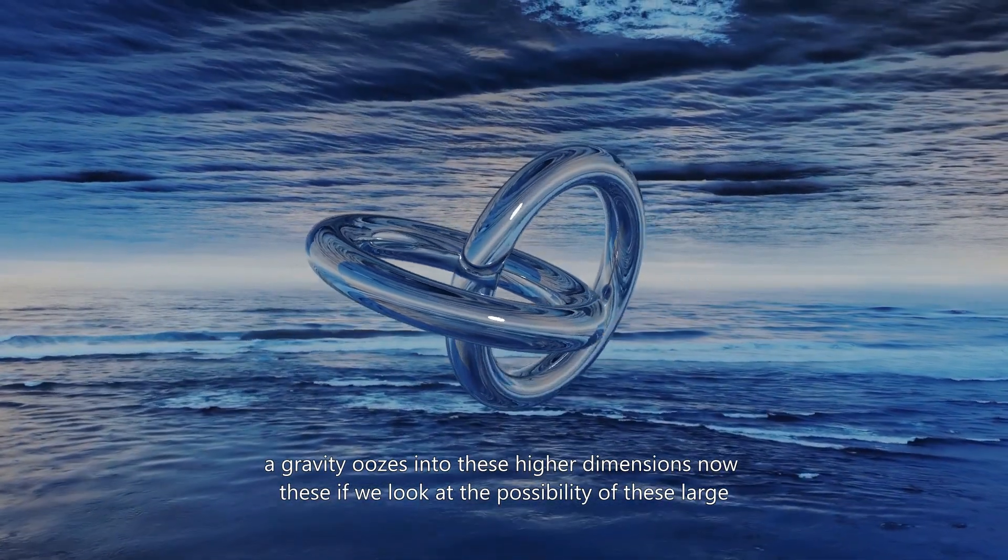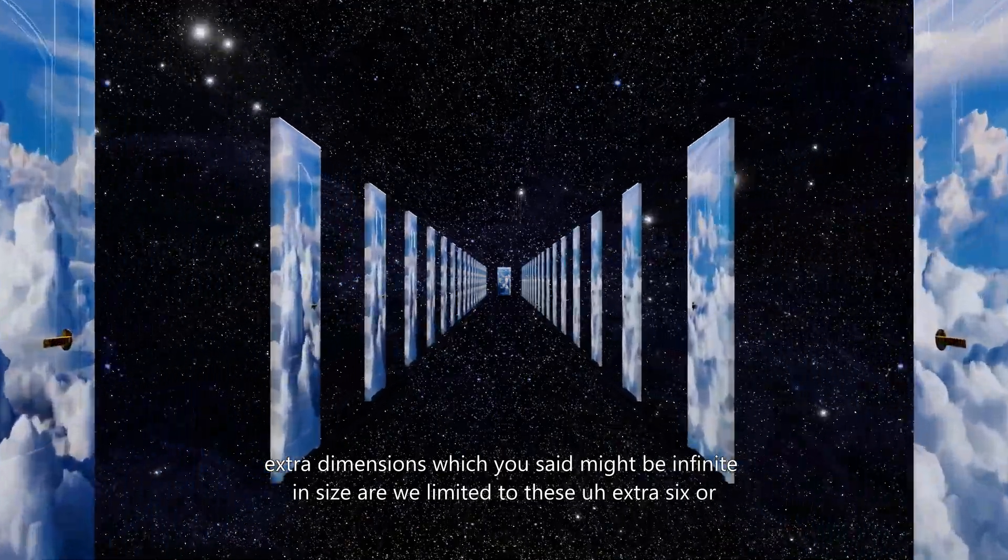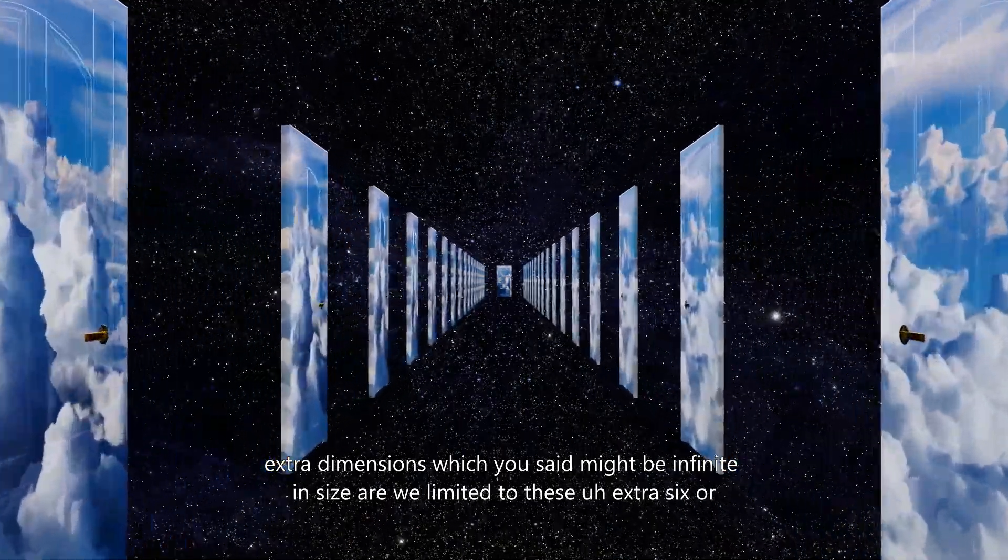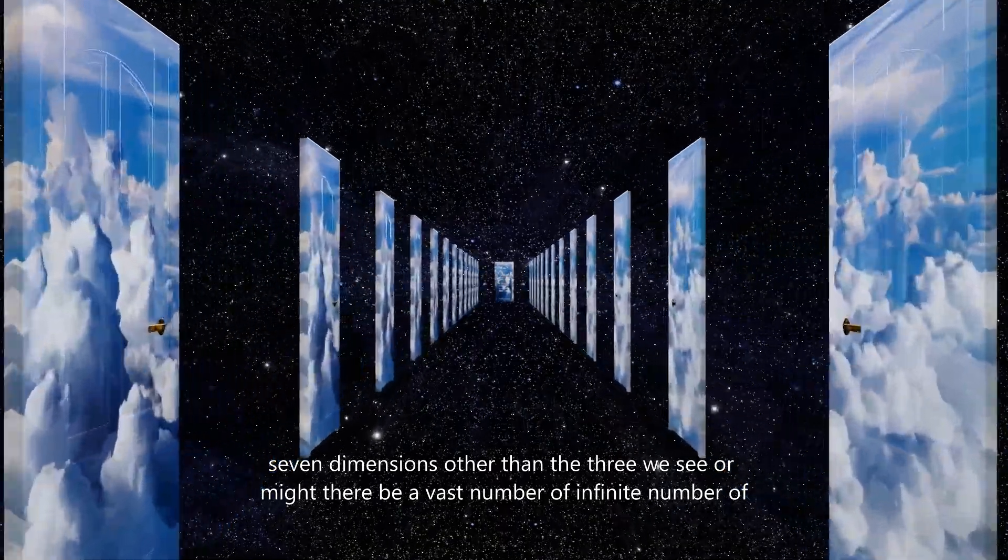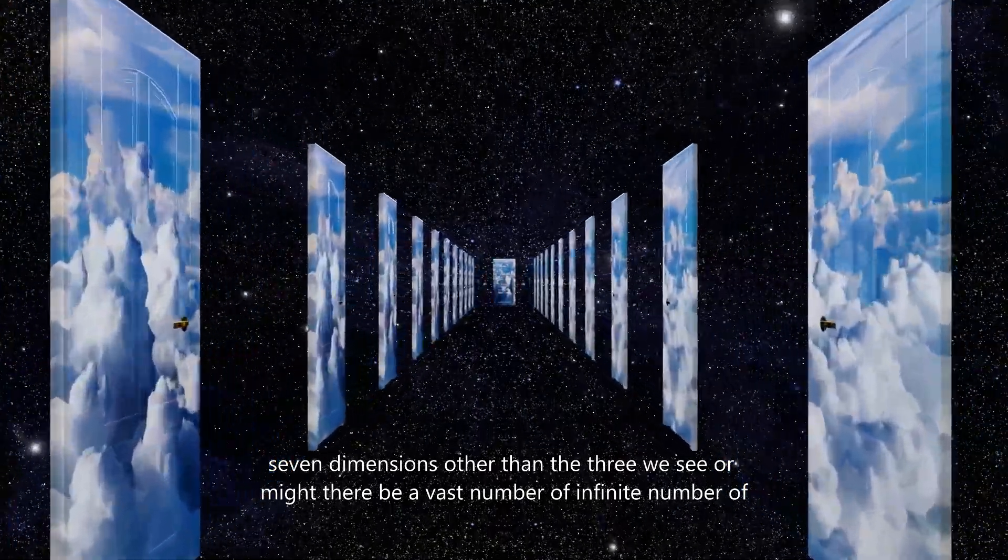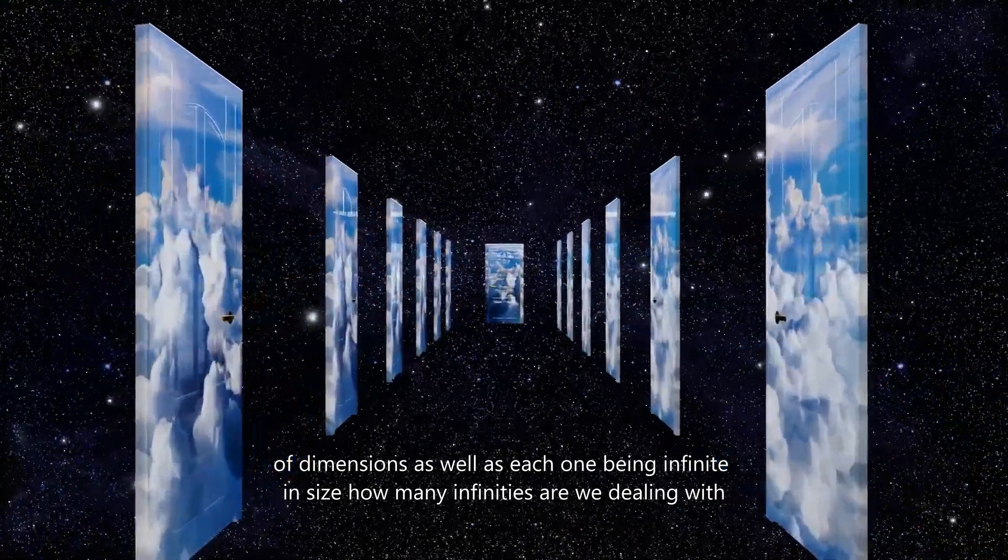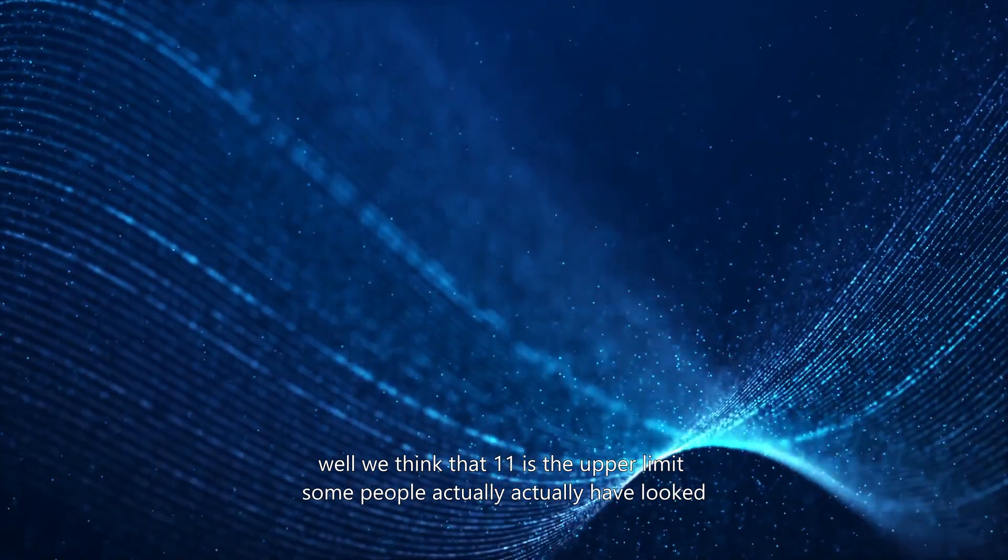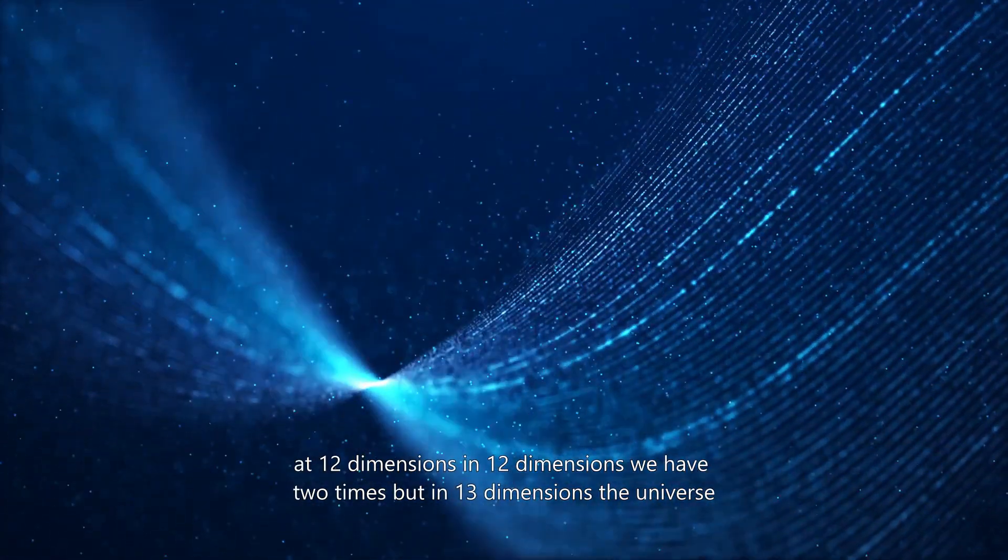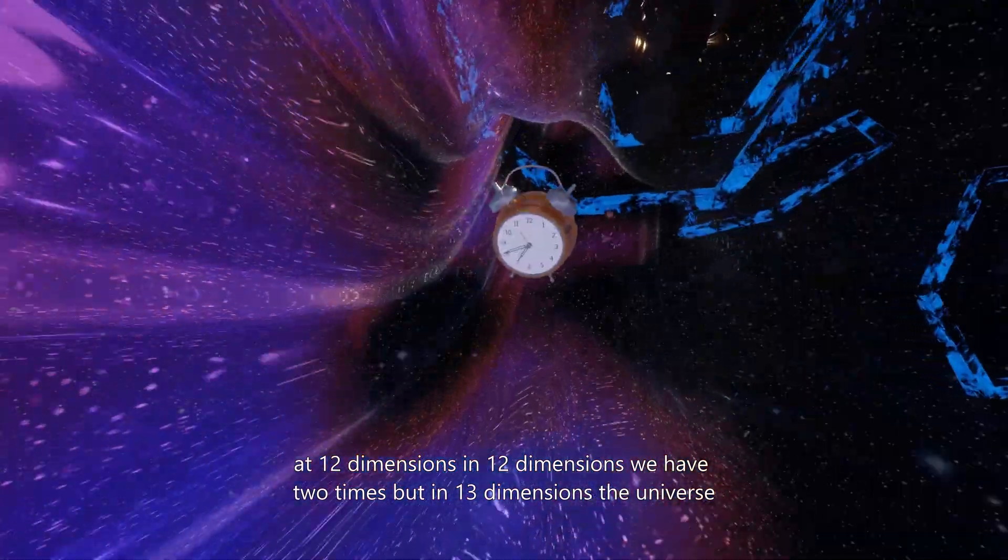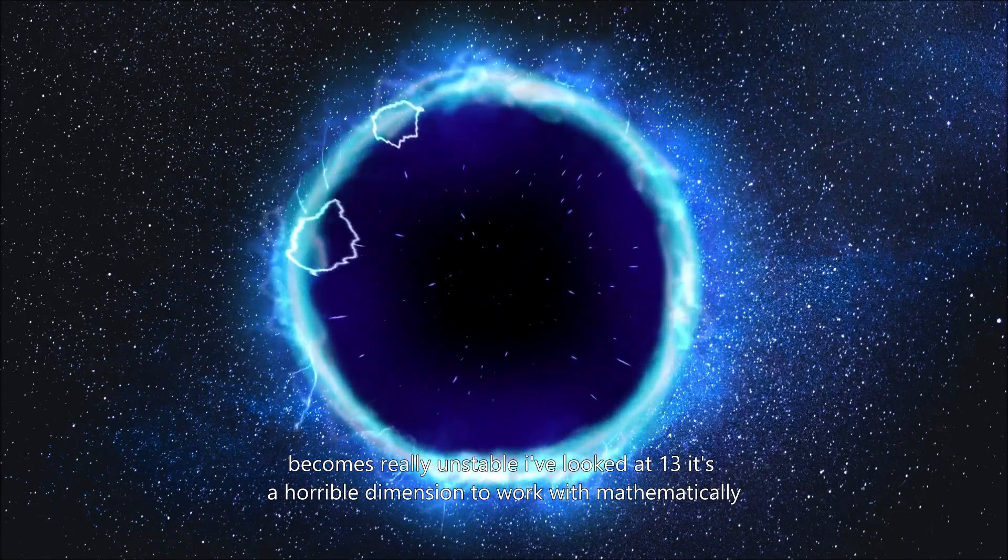Now, if we look at the possibility of these large extra dimensions, which you said might be infinite in size, are we limited to these extra six or seven dimensions other than the three we see? Or might there be a vast number of infinite number of dimensions, as well as each one being infinite in size? How many infinities are we dealing with here? Well, we think that 11 is the upper limit. Some people actually have looked at 12 dimensions. In 12 dimensions, we have two times. But in 13 dimensions, the universe becomes really unstable. I've looked at 13. It's a horrible dimension to work with mathematically.